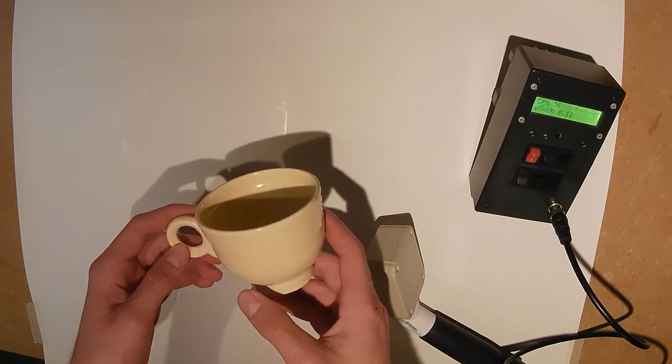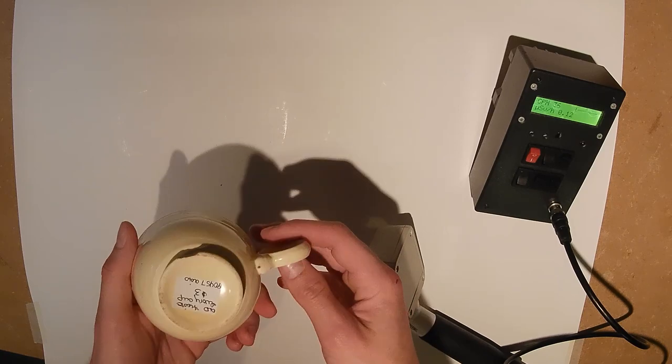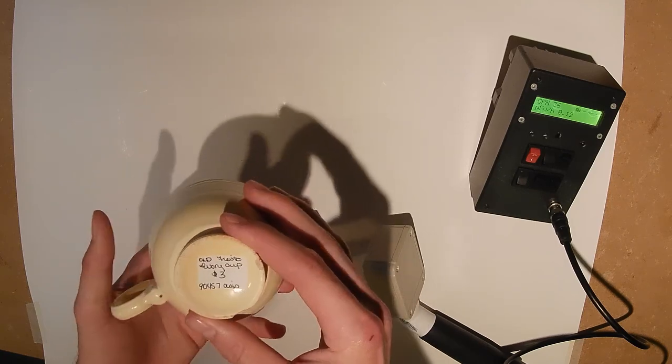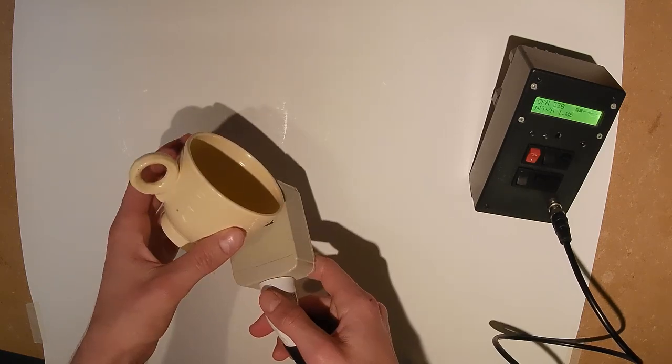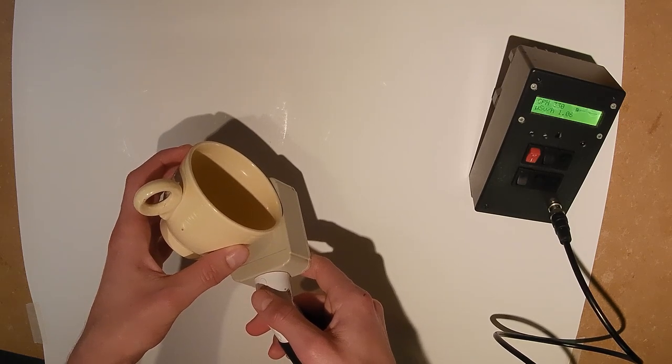This next piece is also from the Fiesta line, but it might not be what you think. It's an early specimen with the so-called ivory color. It measures in at about 400 counts per minute and is not very spicy.